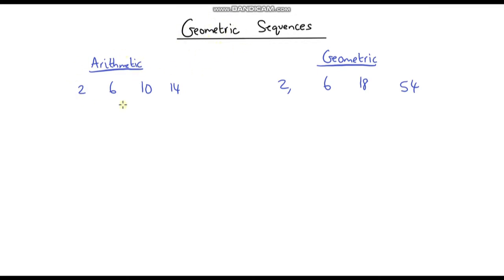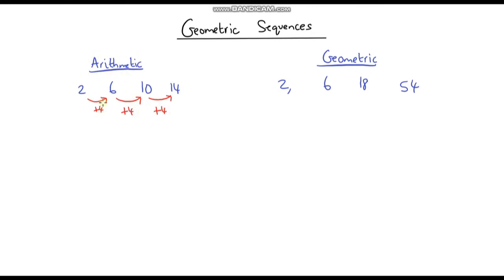We've already looked at arithmetic sequences, so let's have a recap. An arithmetic sequence is a sequence that progresses where we add the same amount each time or subtract the same amount each time. In this sequence we can see that we're adding 4 to go from 2 to 6, the same from 6 to 10, and likewise from 10 to 14. This number we're adding each time is called the common difference.